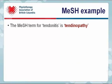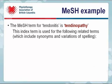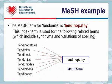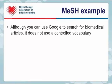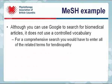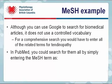Let's look at an example of a MeSH term. The MeSH term for tendinitis is tendinopathy. This index term is used for the following related terms, which include synonyms and variations of spelling: tendinopathies, tendinitis, tendinosis, etc. Although you can use Google to search for biomedical articles, it does not use a controlled vocabulary. For a comprehensive search, you would have to enter all of the related terms for tendinopathy. In PubMed, you could search for them all by simply entering the MeSH term as tendinopathy with MeSH in square brackets.